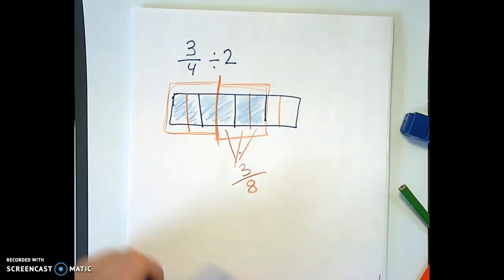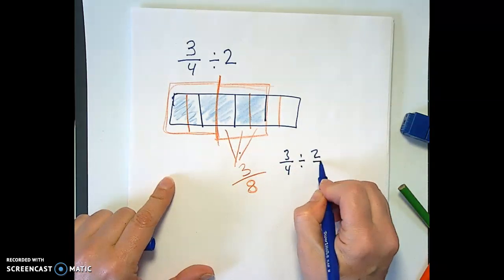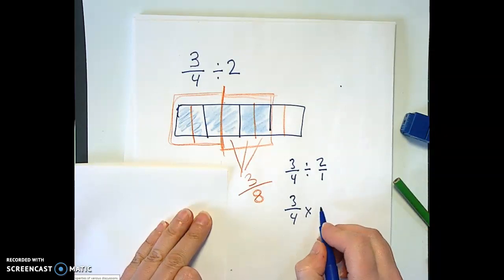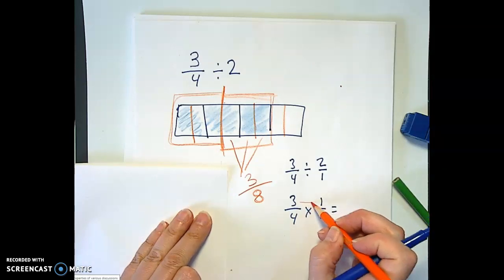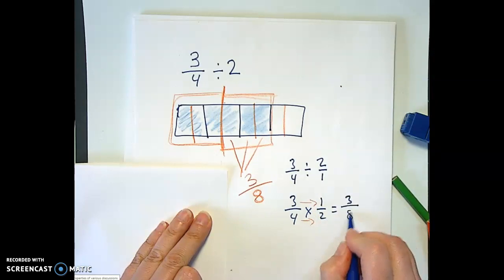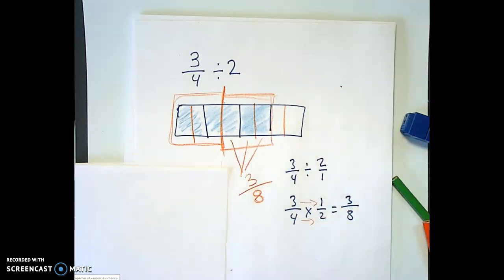And let's do the arithmetic way. 3 fourths divided by 2. So we're just going to do keep change flip. And we've talked about that in the other videos. For multiplication of fractions, as we've talked about in other videos as well. We multiply across the top 3 eighths. So that 3 eighths is what we see here when we broke it into two equal pieces. And it's what we see here when we do the arithmetic.